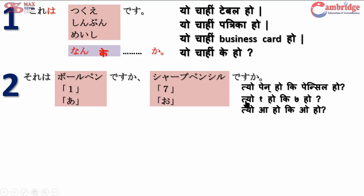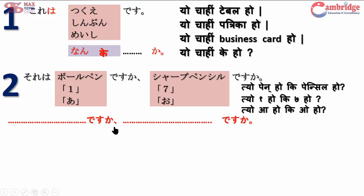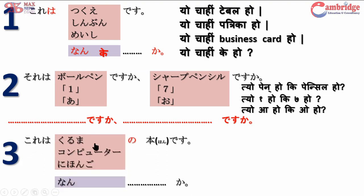This means 'this is a ~.' Grammar number 2 combines these patterns together. The question is written and then we go from pattern 1 to pattern 2. Now we have grammar number 3, which is called 'kore wa kuruma no hon desu' — this is a book about cars.